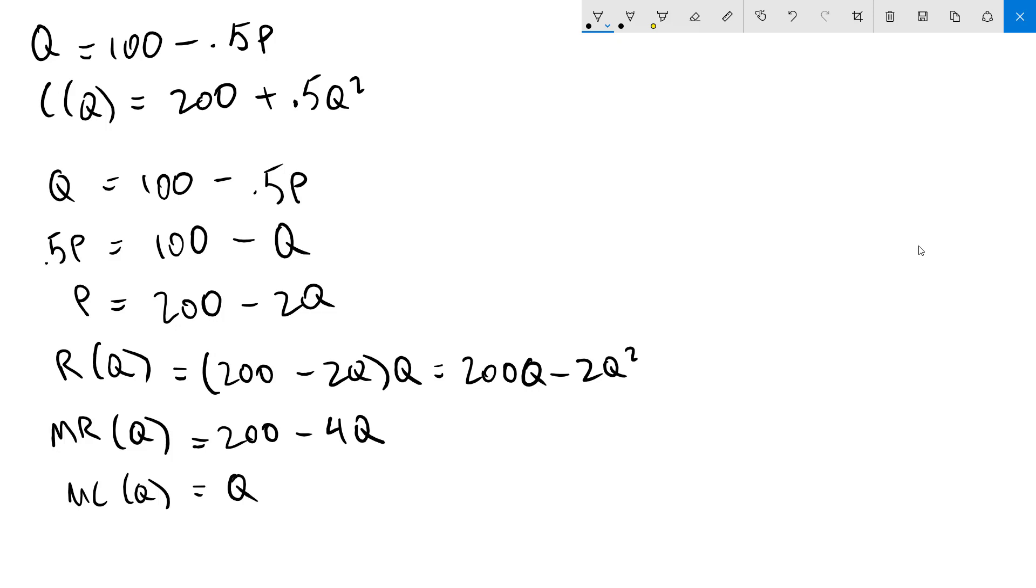To maximize profit I'm going to set marginal revenue equal to marginal cost. So I'm going to get 200 minus 4Q equals Q. Now all I need to do here is solve for Q. So we're going to get 200 equals 5Q. If I add 4Q to both sides, divide both sides by 5, I'm going to get Q equals 40. I'll denote this as QM for our profit maximizing monopoly quantity.